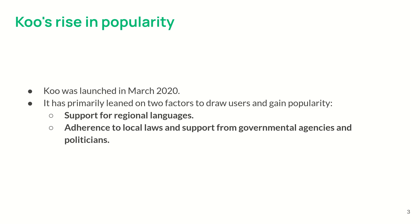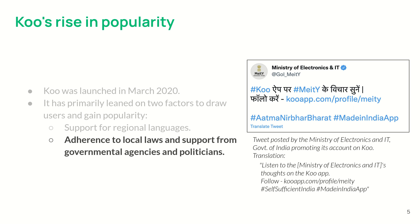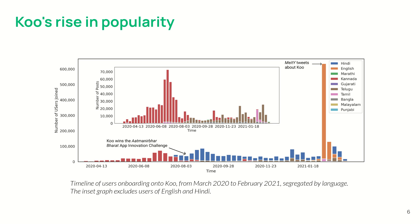Let's discuss Khoo's rise in popularity. It was initially launched in March 2020 and primarily leans on two factors to draw users: its support for regional languages, marketed as a nascent homegrown platform encouraging discourse in regional Indian languages, and its adherence to local laws and support from the government. In February 2021, the Indian government got into a tussle with Twitter over its moderation policies during the farmer protests. That is really when many politicians and government agencies started posting about Khoo and shifting to the same. Here is a timeline graph of users onboarding onto Khoo — we see a spike in February 2021 when these discussions took place, also when the IT Ministry of India posted about Khoo.